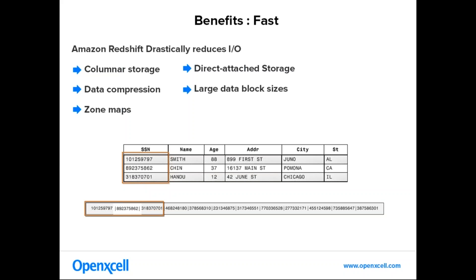Data compression saves space to store data on disk and also helps in retrieving data very quickly. Zone maps keep track of minimum and maximum values for each and every block of disk storage — they skip unnecessary blocks for a given query and reduce IO operations. Using direct attached storage gives high performance data processing so that it can maximize throughput between CPUs and drives. Generally a normal database has a data block size ranging between 2KB to 32KB, but Amazon Redshift uses a block size of 1MB, which also helps reduce IO operations.